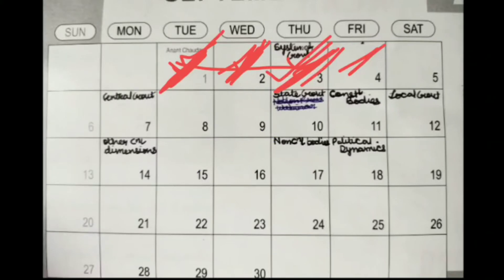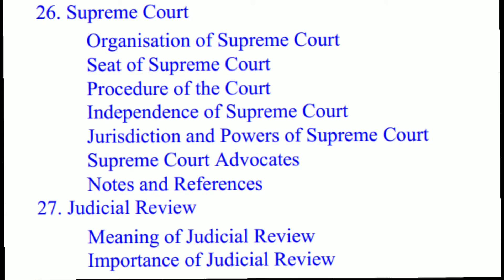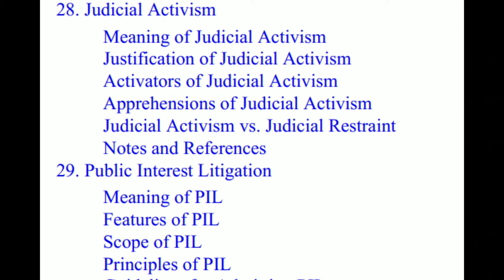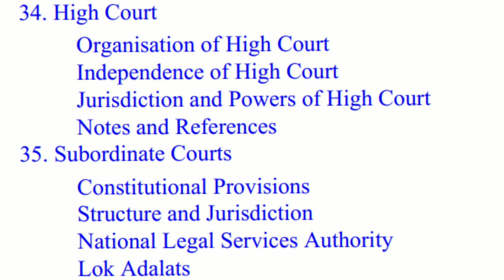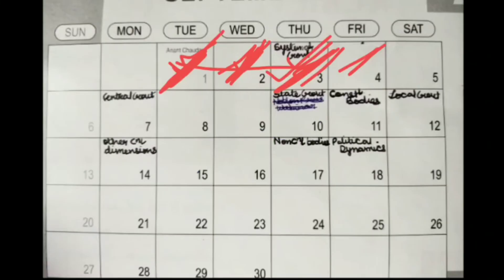On day five, you complete Supreme Court, Judicial Review, Judicial Activism, and Public Interest Litigation — all four chapters together constitute your Judiciary. What else is left for Judiciary are chapters 34 and 35, which are High Courts and Subordinate Courts. So you do all of the Judiciary at one go on day five.